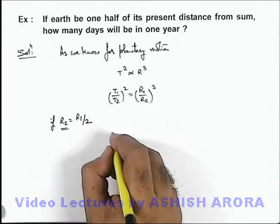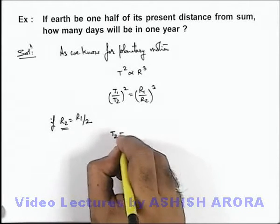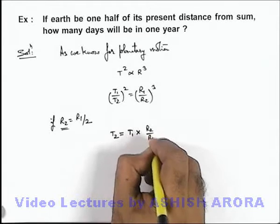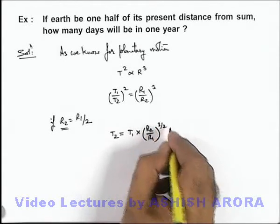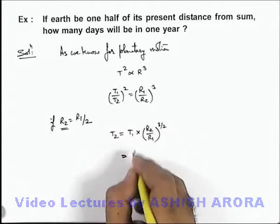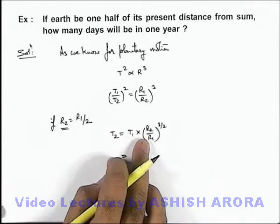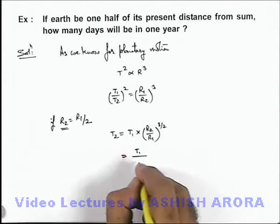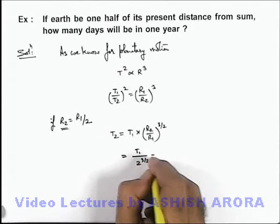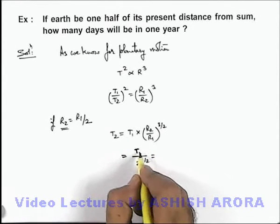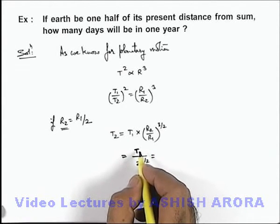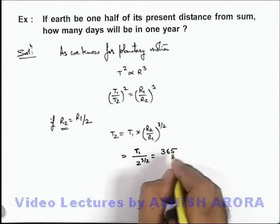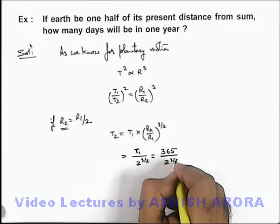Then from this expression we can get the value of T2 is equal to T1 multiplied by (R2/R1) to the power 3/2. On substituting the values, we get T1 times (1/2) to the power 3/2. The time period of revolution of Earth about the Sun at present is 365 days, so it is 365 divided by 2 to the power 3/2.